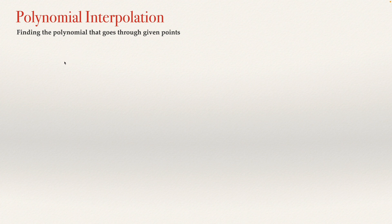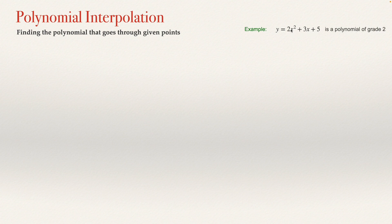Finding a polynomial that passes through given points — for example, finding a polynomial like y equals 2x squared plus 3x plus 5. This is a polynomial of grade 2. The grade of the polynomial is always the maximum exponent of the variable x.